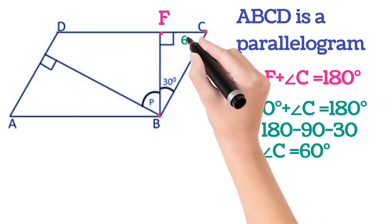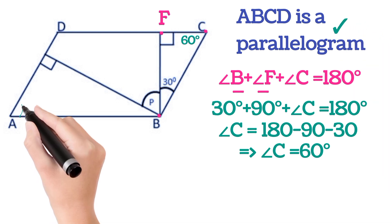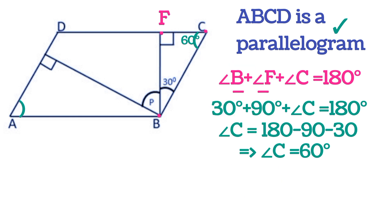So this angle is 60 degrees. Now, since ABCD is a parallelogram, this angle will be equal to this angle. Opposite angles are equal in a parallelogram.